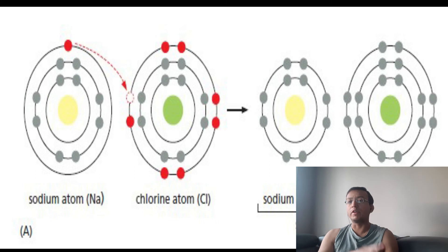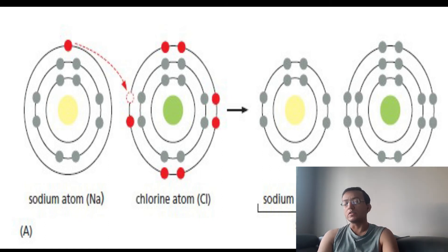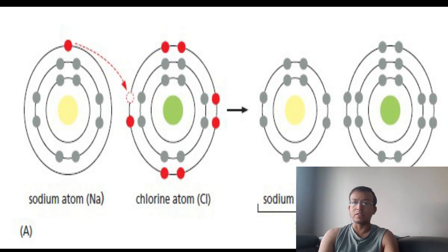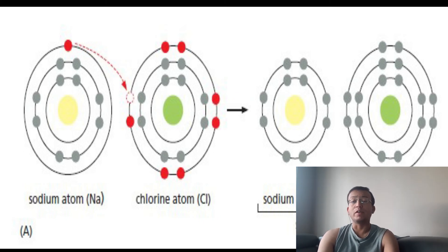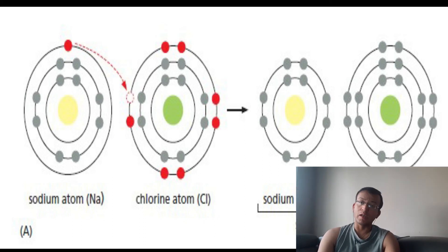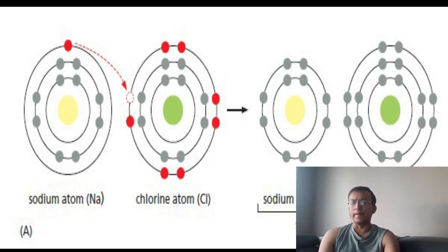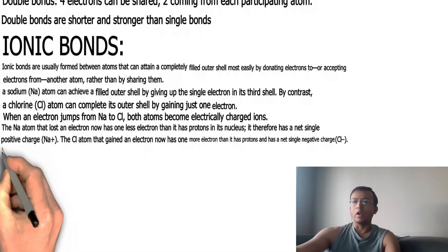Small inorganic ions such as Na⁺, Cl⁻, K⁺ (potassium), and Ca²⁺ (calcium) play important roles in many biological processes, including the electrical activity of nerve cells. That's why we need to study this — when we study the nerve cell and conductivity, we will understand it more clearly.